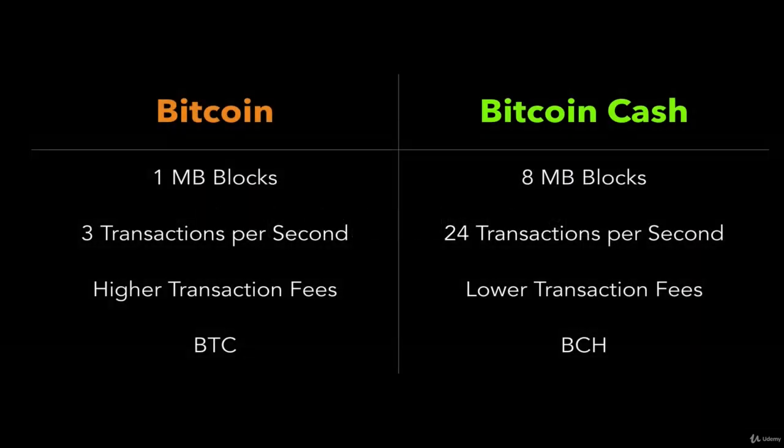Bitcoin Cash would have 8 megabyte blocks, which would 8x increase the actual capacity of a block — by a factor of 8 — increasing the capacity of the network in terms of how many transactions per second it can handle. That would also have the added effect of lowering transaction fees, just because there would be greater supply for the same given demand.